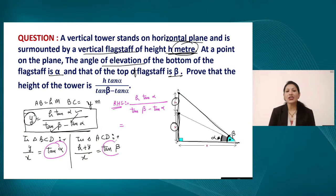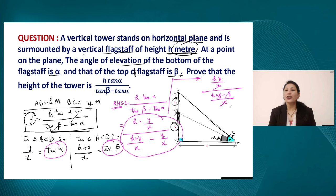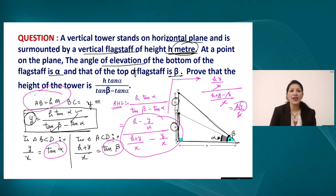Substituting into the right hand side: it becomes h times (y upon x) divided by (h plus y upon x minus y upon x). Simplifying, this gives h y upon x divided by h upon x. Here x cancels, giving h y upon h, which equals y. This is the height of the tower, and thus the expression is proved.